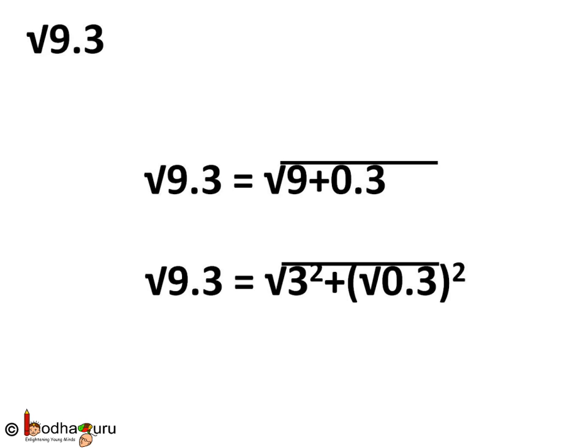That is root of a decimal number. Is it even present on the number line? Let us see. If we break down 9.3, 9.3 is 9 plus 0.3. So square root of 9.3 is equal to square root of 9 plus 0.3. Now 9 can be written as 3 squared and 0.3 can be written as square of square root of 0.3.